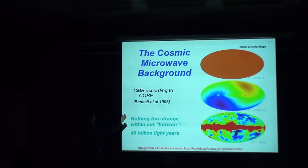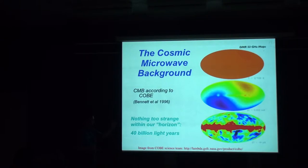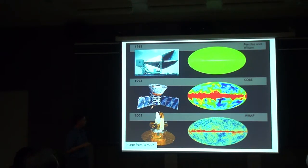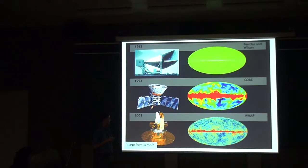This tells us that the universe is extremely smooth, which was one of the mysteries in cosmology for a long time — why is the universe smooth to one part in 10^5? COBE released maps in 1992; the initial discovery of the CMB was 1965. In 2003, the sky was mapped with the WMAP satellite. So there was a jump from COBE's resolution to WMAP's resolution.